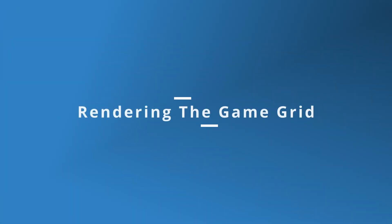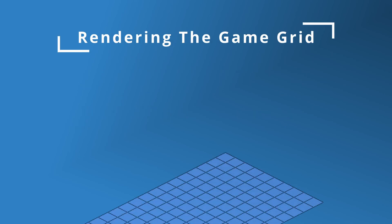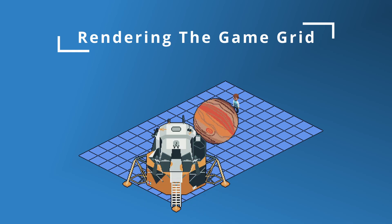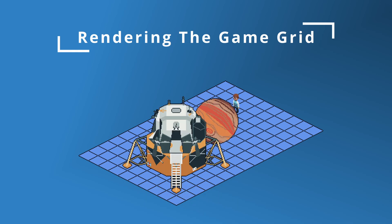But why are some objects using the same depth value? They look like they should be on top of each other and therefore have different depth values. So now we've got to understand rendering the game grid. The grid uses an isometric perspective, which for simplicity means objects at the top should always be behind objects at the bottom.